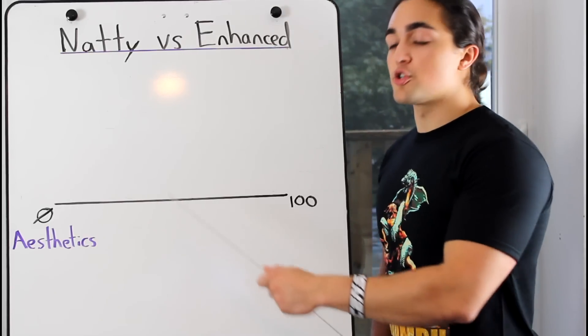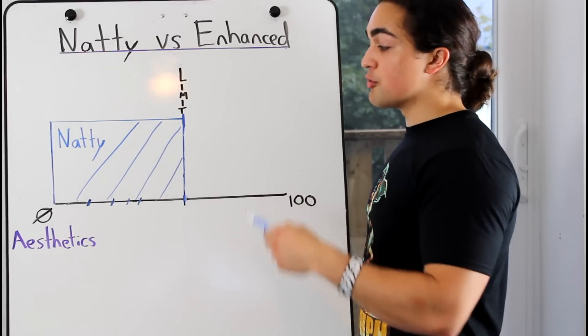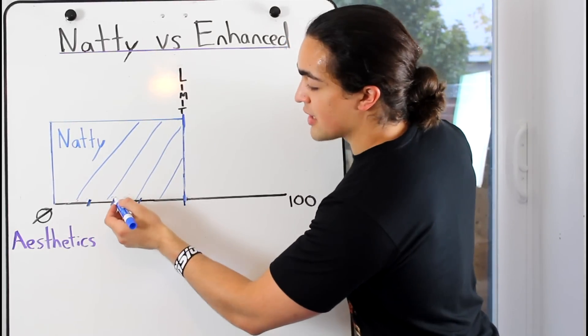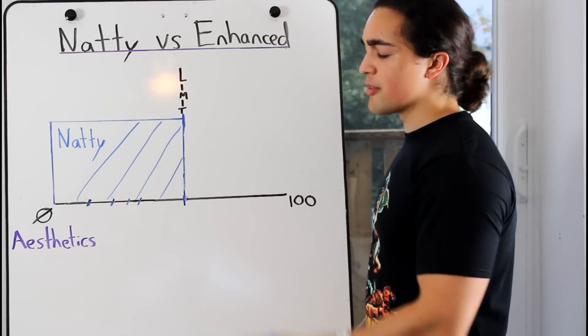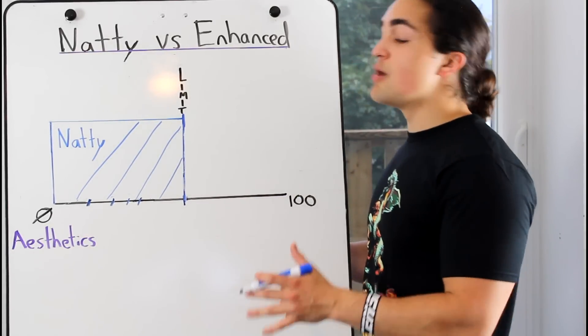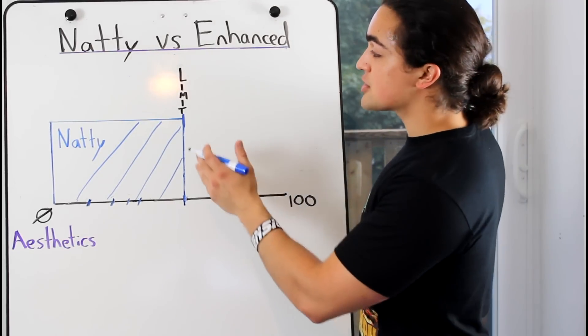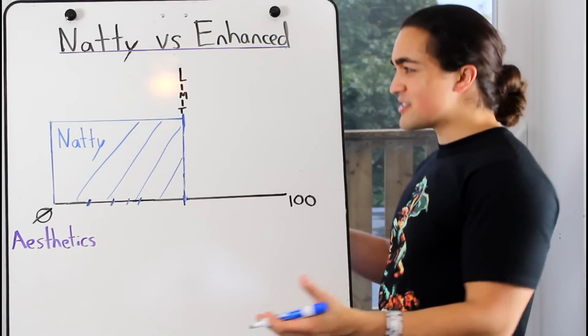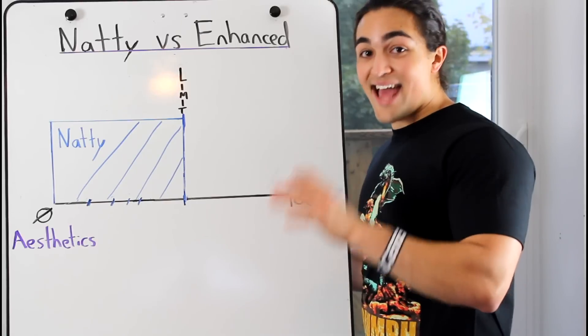As you continue to train, you slowly get better. Your rate of muscle growth over time slows down. First here you might build 15 pounds, then 8 pounds, followed by 5 pounds, 4 pounds, and so on and so forth. So much so, when you're an advanced natural lifter, it might take you 10 years to build 10 pounds of lean muscle mass. And eventually, there is that limit, which can be found right here. Your natural limit, which is the most amount of muscle you can hope to achieve as a natural lifter.